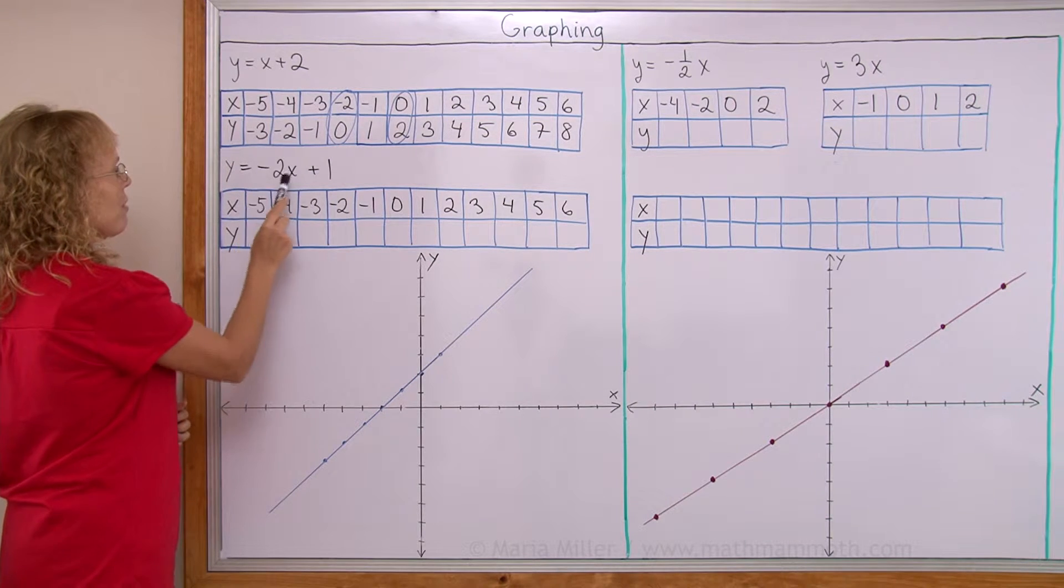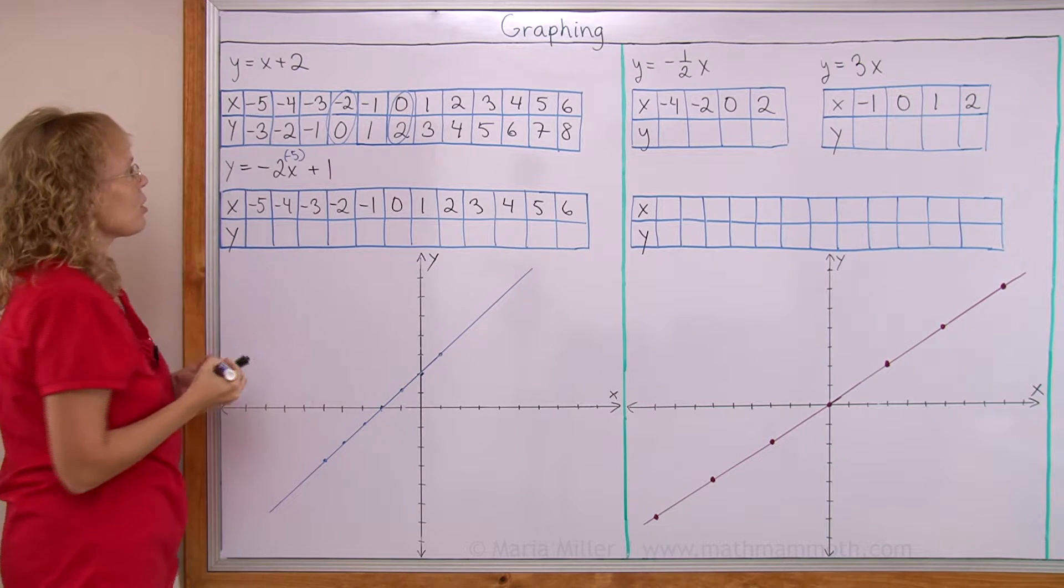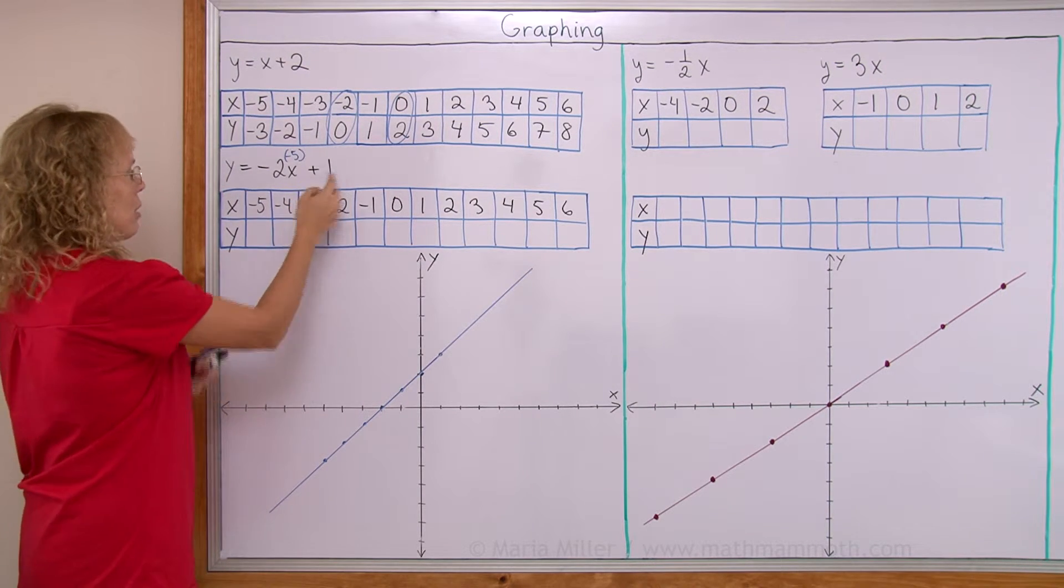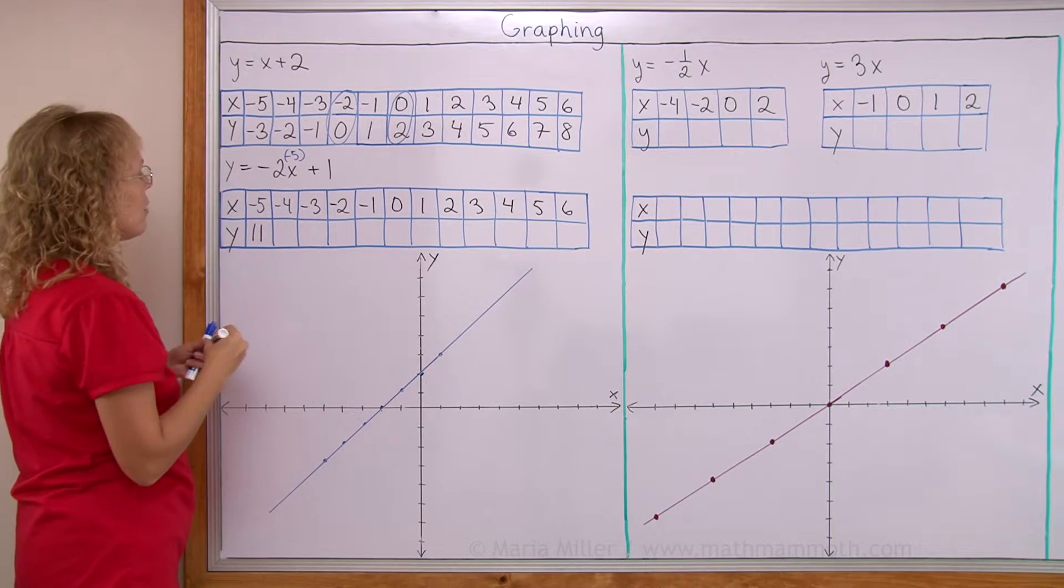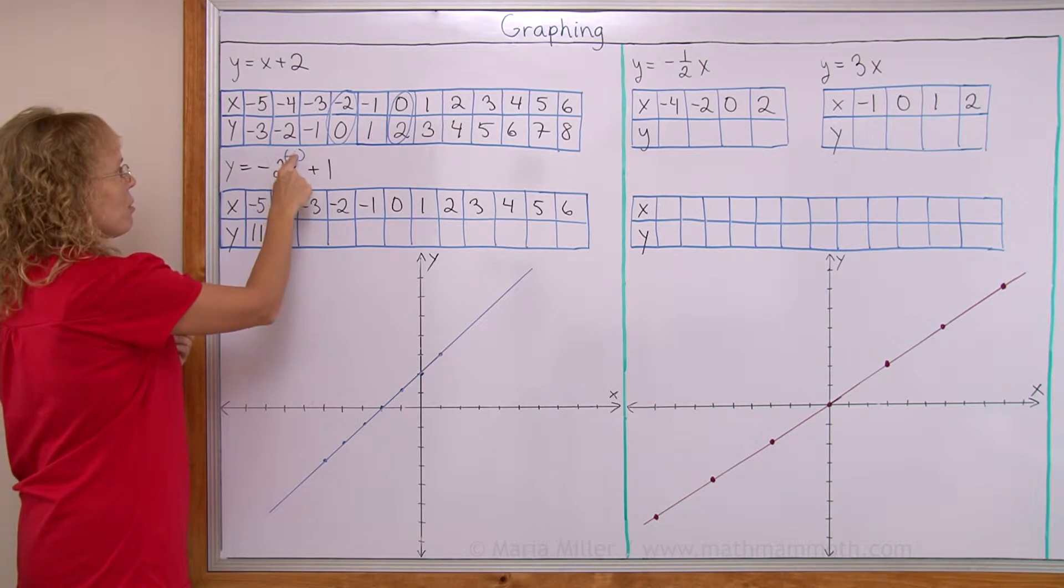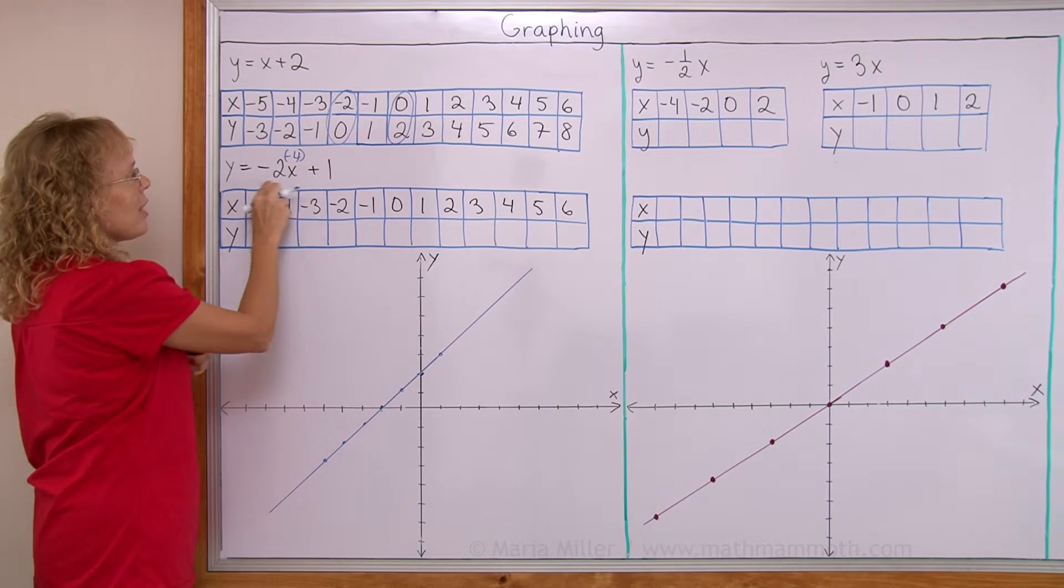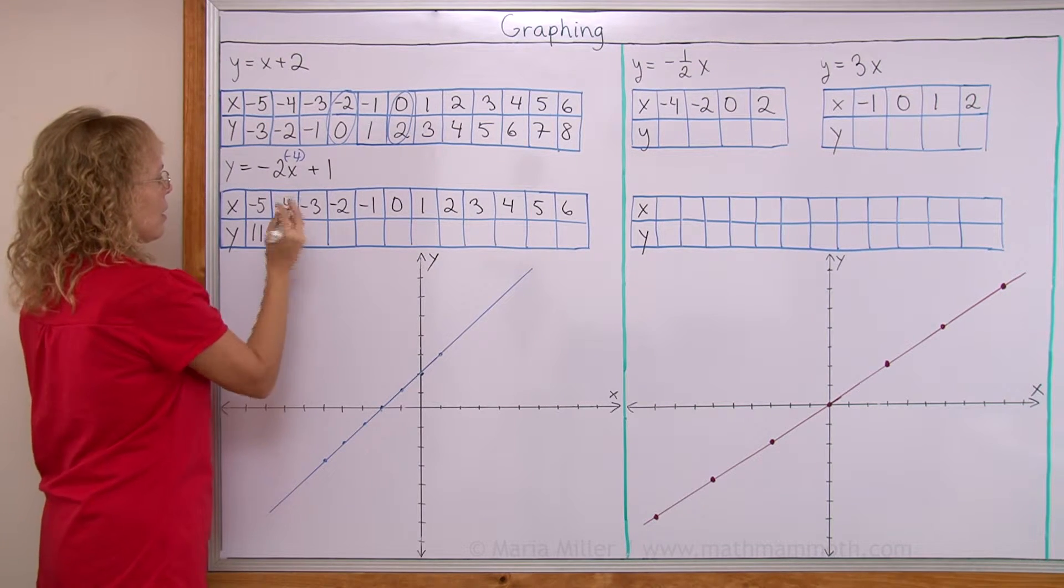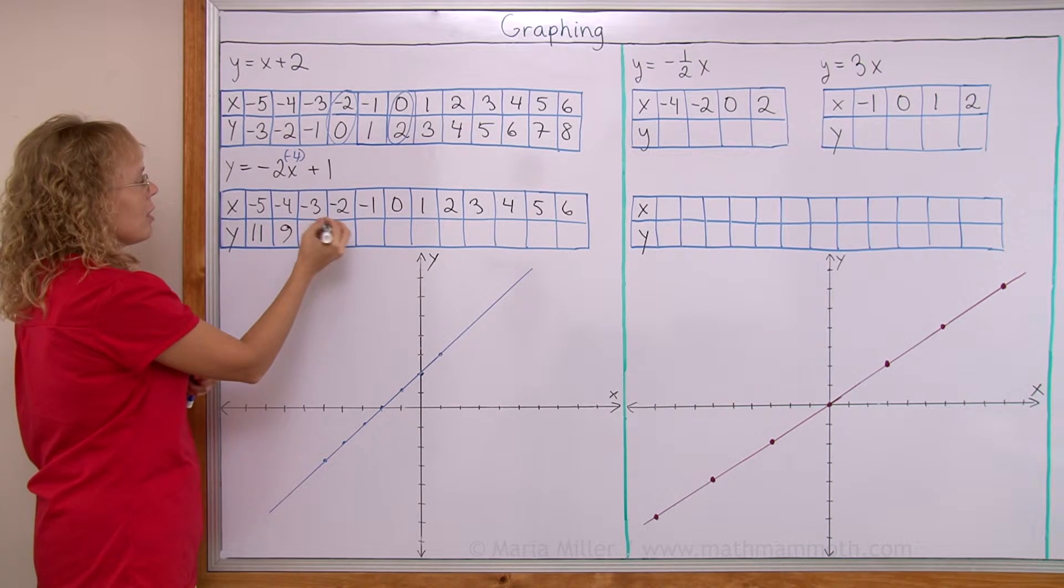If x is negative 5, then you put negative 5 here. So you get negative 2 times negative 5. That's 10 plus 1 would be 11. Then if x is negative 4, we would get 8 plus 1 equals 9. If x is negative 3, I get 6 plus 1 equals 7.